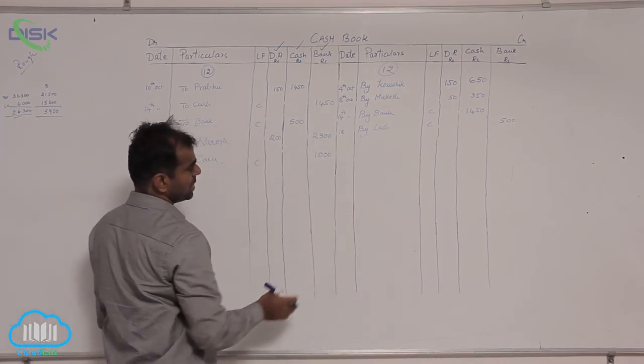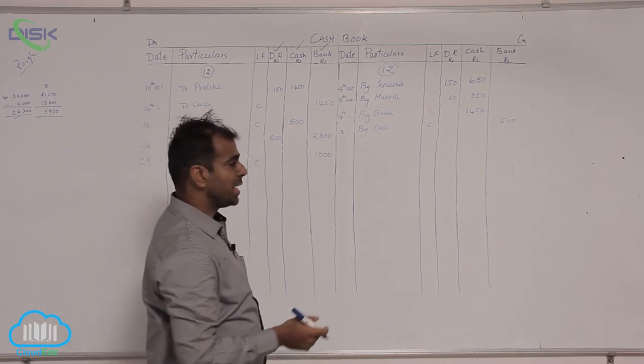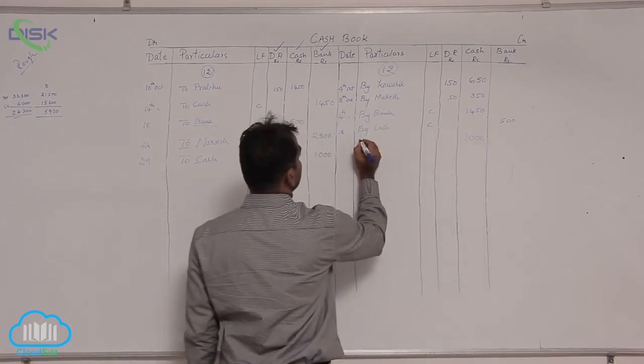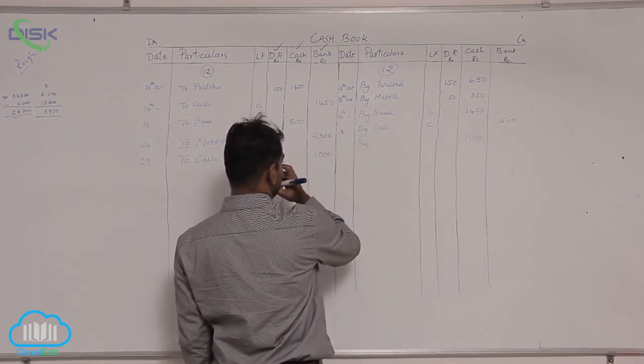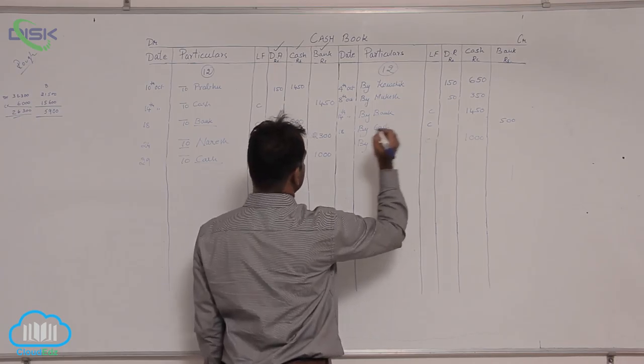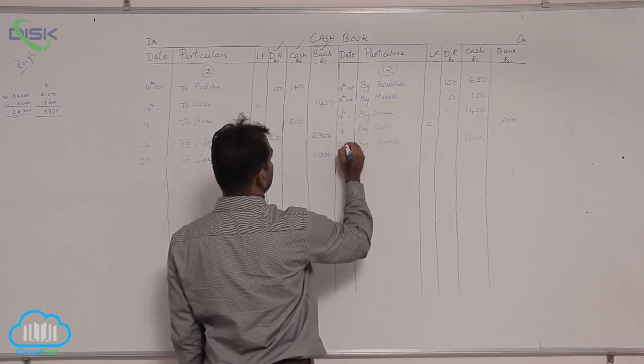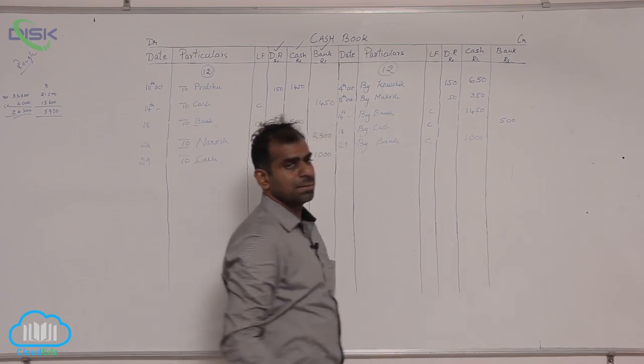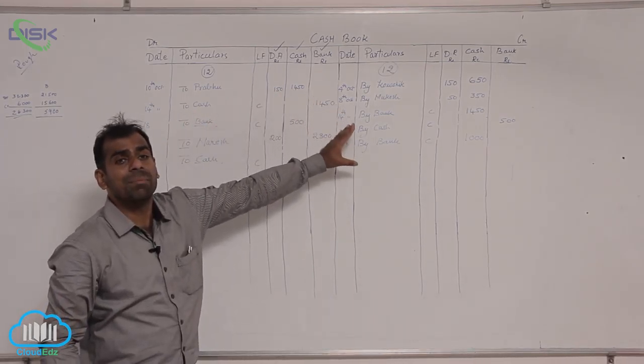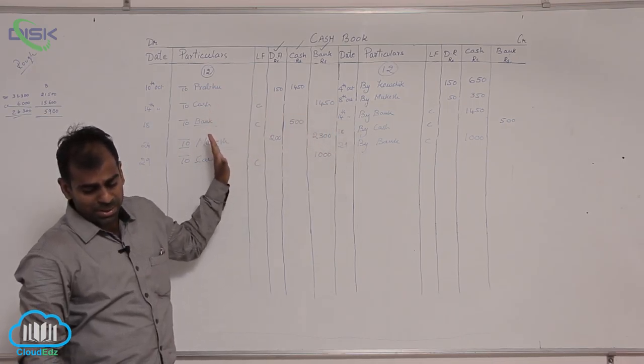We should record this on the opposite side. So, cash has to be credited, so enter 1000 in cash column and by bank, so contra, C 29th, so that is how you do these important transactions of this problem. Thank you.